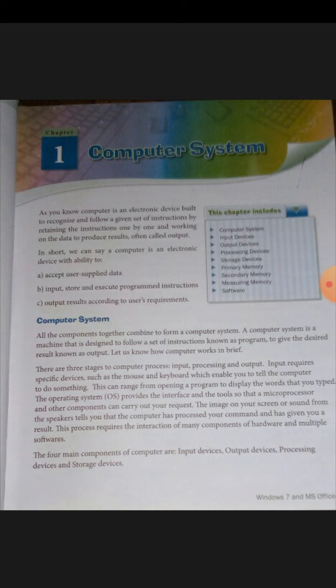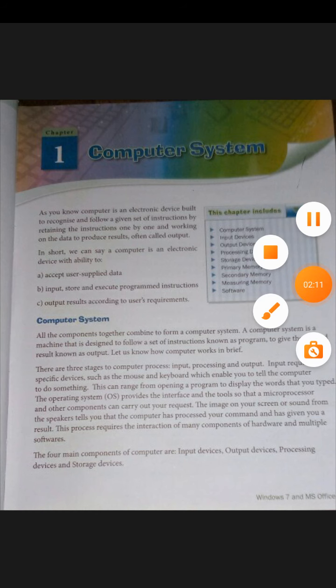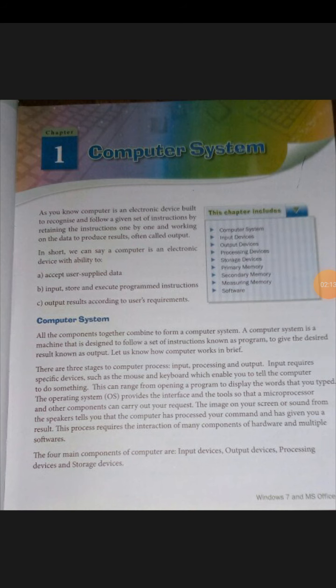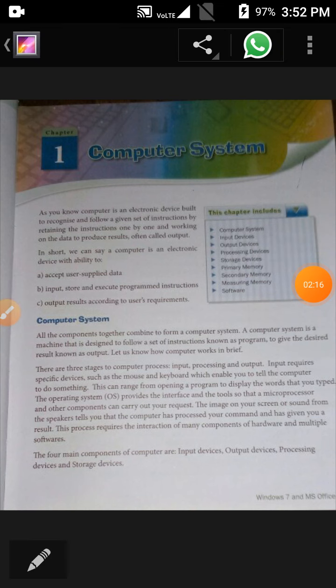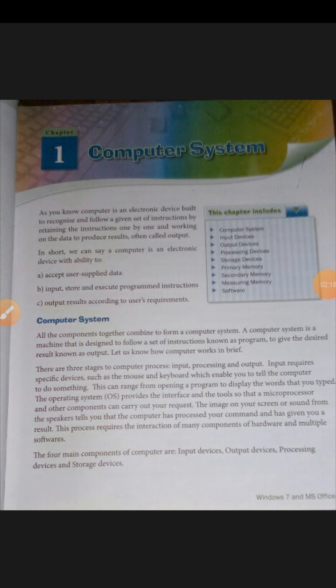The computer will input, store, and then execute the program instructions, then output results according to the user's requirement. Now let's talk about the computer system. All the components together combine to form a computer system.